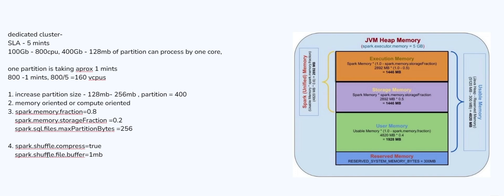Since you have changed the partition, you should also change this value for a compute-oriented job. You can also enable spark.shuffle.spill.compress equal to true — whatever data is spilling to the disk will be compressed, and due to the compression you get better performance. If you have more cores, enabling this configuration can improve your job performance.